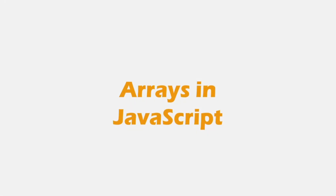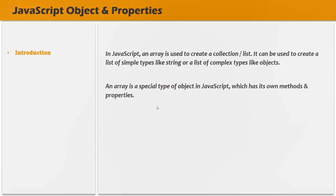In this lecture, we are going to learn about arrays in JavaScript, what it is and how to create and use it. Basically, an array is used to store an ordered collection of data, and those data can be accessed by using its index. In JavaScript, an array is used to create a collection or a list. It can store simple types like string or number, or complex types like an object. Remember that an array is a special type of object in JavaScript which has its own methods and properties.